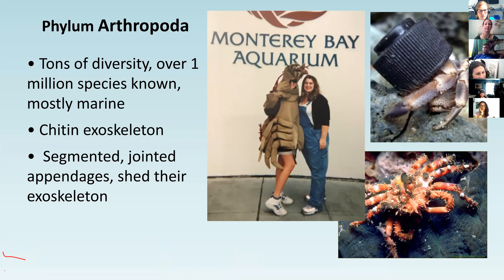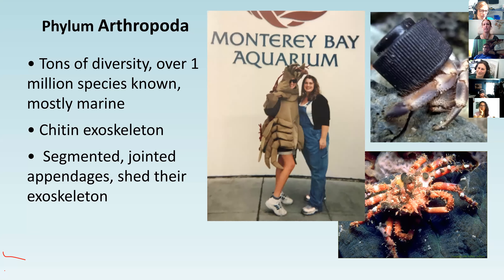This is a picture of me as a decorator crab at the Monterey Bay Aquarium - one of my first jobs in marine science. Decorator crabs have little velcro-like structures on their backs and for camouflage they'll attach algae and even anemones. Shout out to the Monterey Bay Aquarium - if you ever get to California, I think it's one of the best aquariums in the world; it really showcases local west coast species and is big on conservation and research.